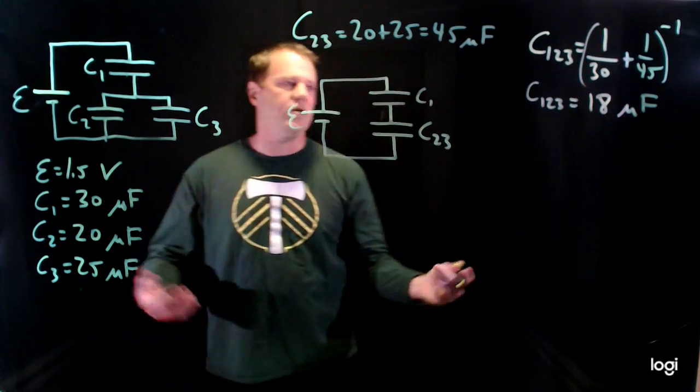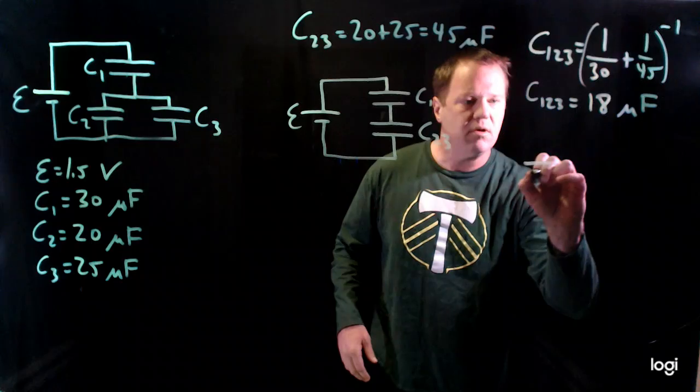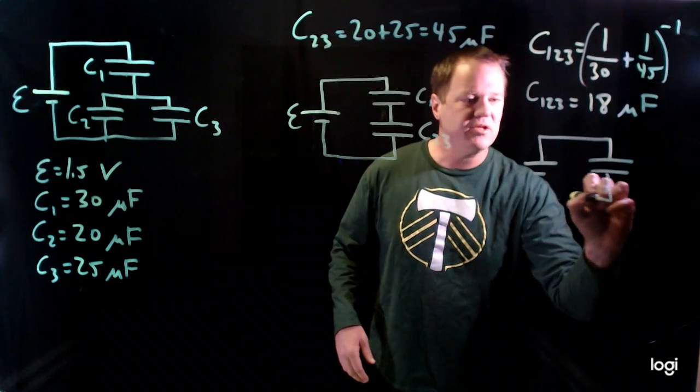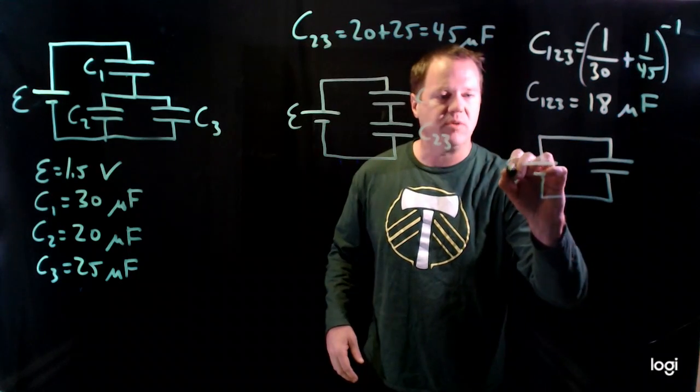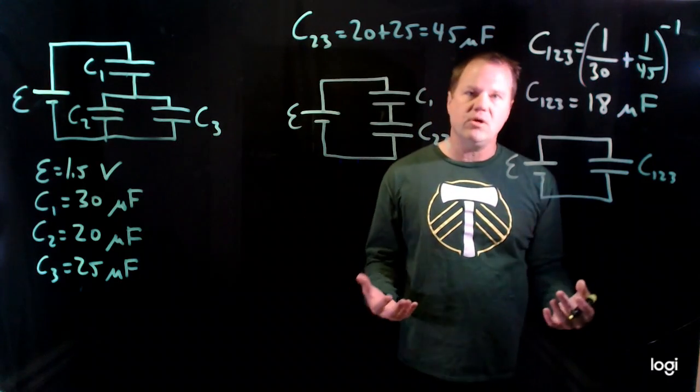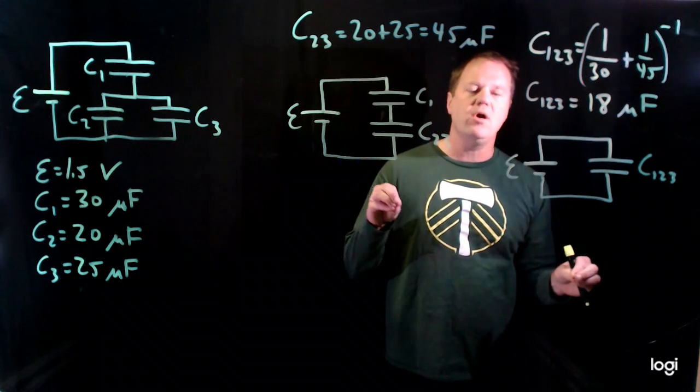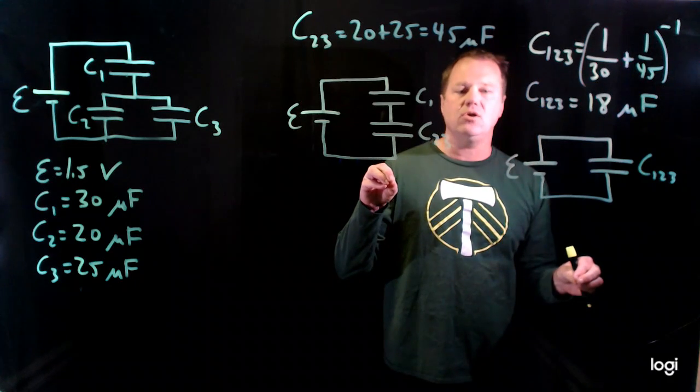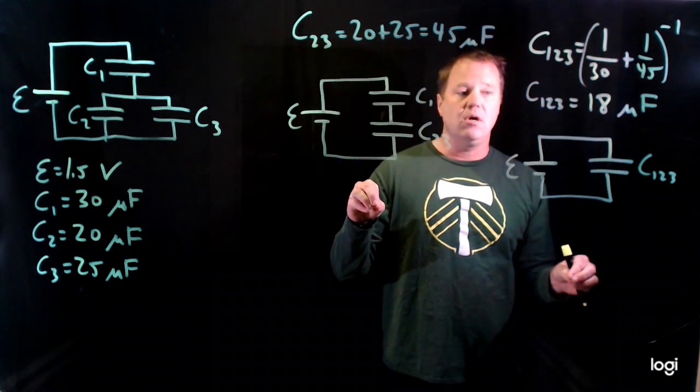So redraw the circuit. So we have this right here, we got a battery, and we've got a capacitor. So this is pretty manageable. We have one battery, one capacitor. And as I mentioned originally, the goal is to solve for the potential difference and the charge of each of those capacitors.